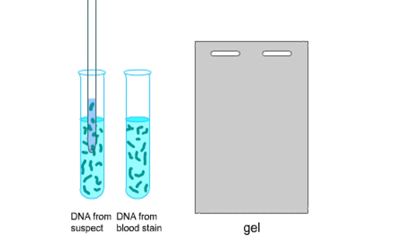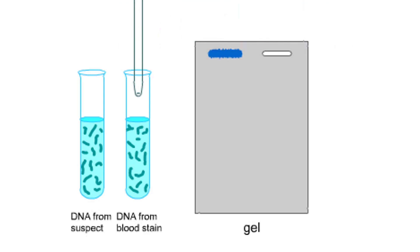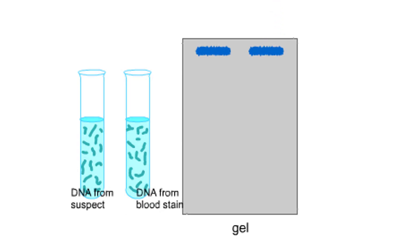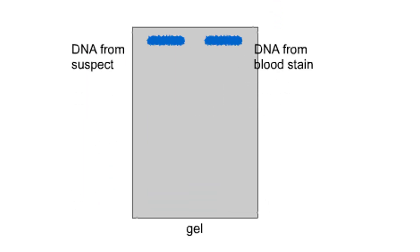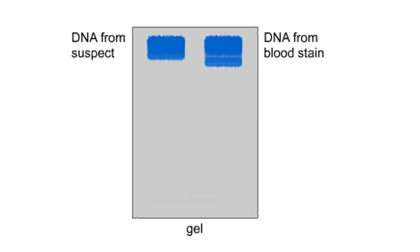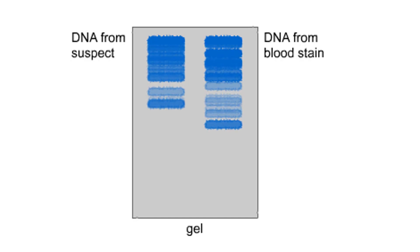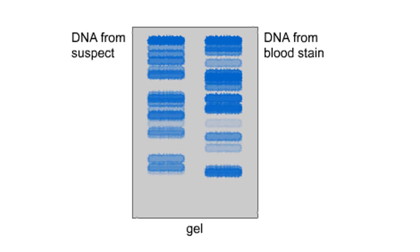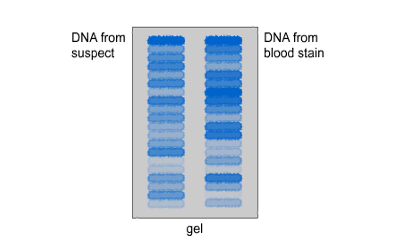The DNA fragments are placed on an electrophoretic gel. When an electric current is applied to the gel, the DNA fragments migrate through the gel toward the positively charged pole. The smaller the fragment, the faster it will migrate.